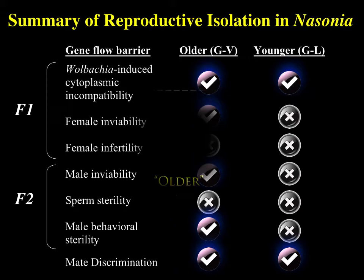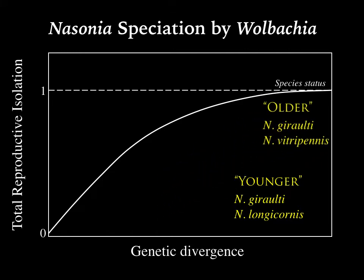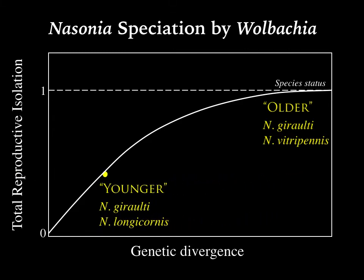Plotting genetic divergence against reproductive isolation, the older species pair sits up in the chart as good species with lots of isolation from Wolbachia and many other reproductive isolation traits. The younger species pair has less reproductive isolation and less genetic divergence. The effect of the Wolbachia symbionts is to push species status to completion by acquiring different Wolbachia infections — something Nasonia appears to be very good at.